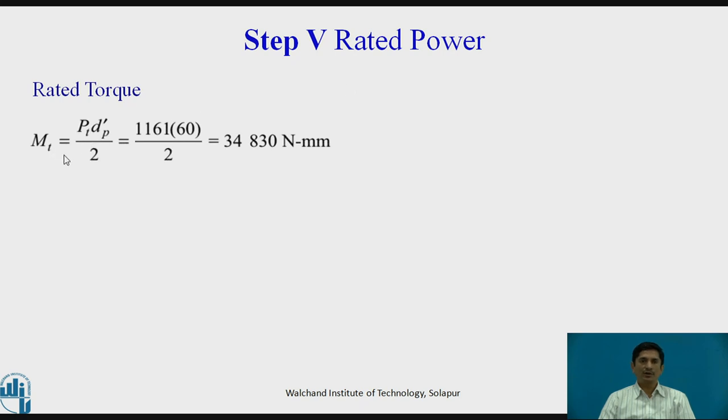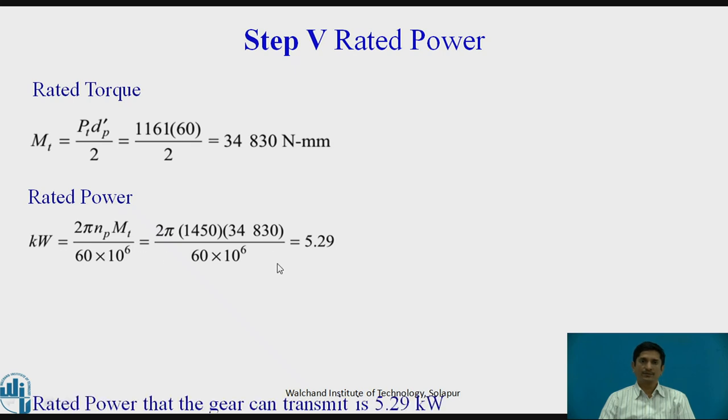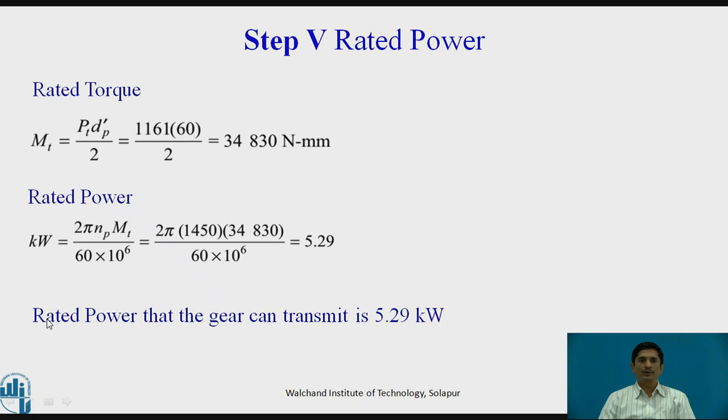From that, how to calculate the rated power? Rated power is given as, first we need to calculate the torque. Mt equals Pt, tangential force multiplied by the radius Dp' by 2. We can get the torque. From the torque, we can get the rated power. Rated power is 5.29. You need to write the answer as: rated power that the gear can transmit is 5.29 kilowatt.